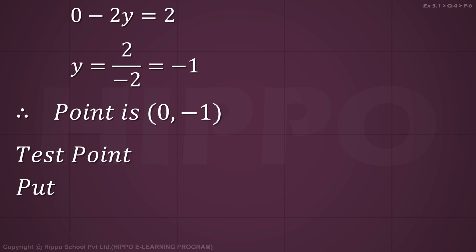Now for the test point, put (0,0) in 5x plus 7y less than 35. 0 plus 0 less than 35, which gives 0 less than 35, which is true.